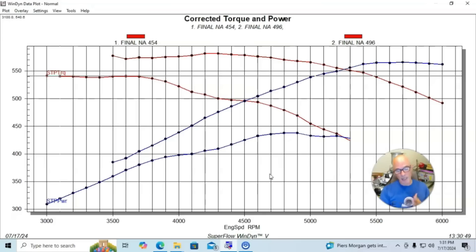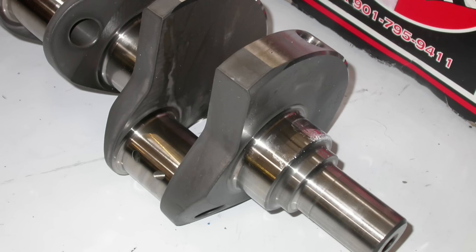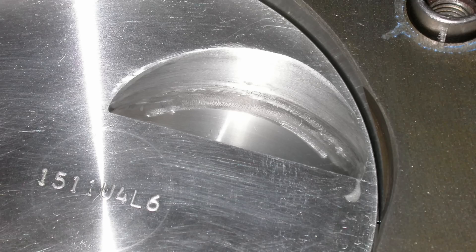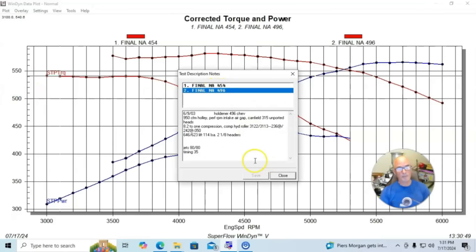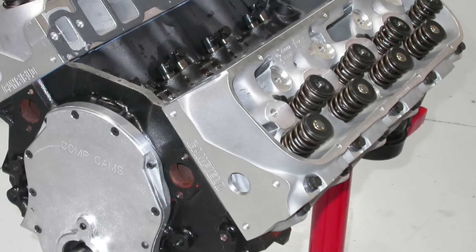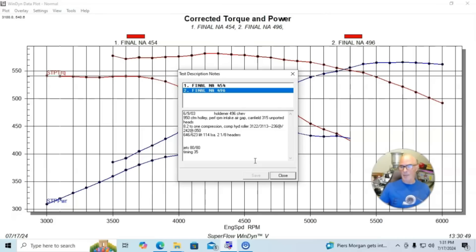On this 496, we did change a couple of things. We bored this thing 60 over, we put the 4250 stroke crank in it. But we also lowered the compression on this thing. We made this an 8.25 to 1 motor, mostly because we were thinking that this thing was going to get lots of boost run on. We did run this thing with lots of different combinations and lots of different boost from lots of different size blowers.